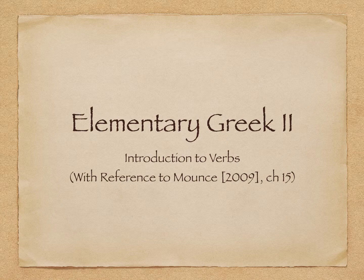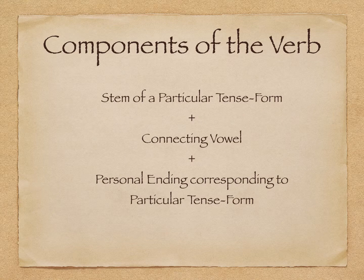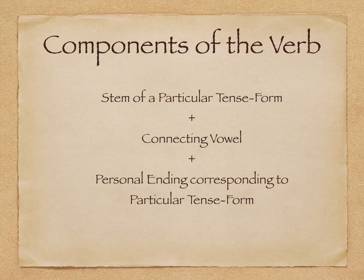We'll begin with an introduction to verbs. There are several components of the verb — three in fact — and we will repeat these over the next several weeks. First, the stem. The stem, or the root of a particular tense form, carries the meaning of the word. That is where we get the idea of the word. There are other components that will make up that particular word, but the stem carries the meaning.